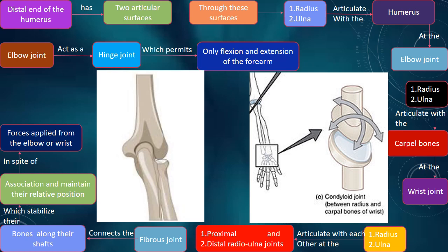The radius and ulna articulate with the carpal bones at the wrist joint. The radius and ulna also articulate with each other at the proximal and distal radioulnar joints.